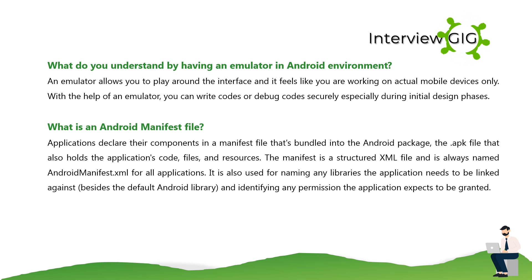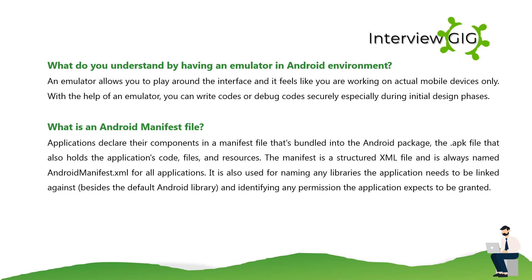What is an Android manifest file? Applications declare their components in a manifest file that is bundled into the Android package (the APK file), which also holds the application's code files and resources. The manifest is a structured XML file and is always named AndroidManifest.xml for all applications. It is also used for naming any libraries the application needs to be linked against, and identifying any permissions the application expects to be granted.